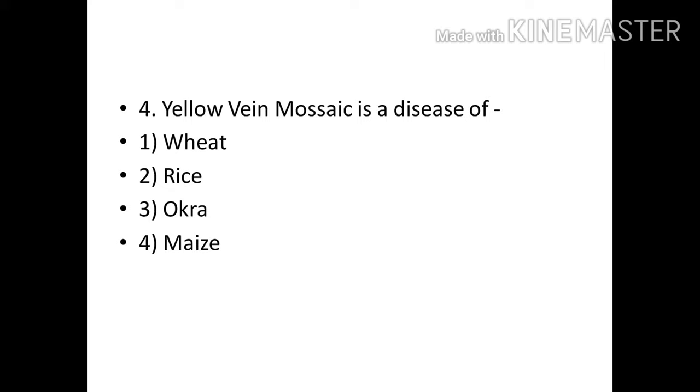Yellow vein mosaic is a disease of wheat, rice, okra, or maize? Correct answer: Option C, Okra.